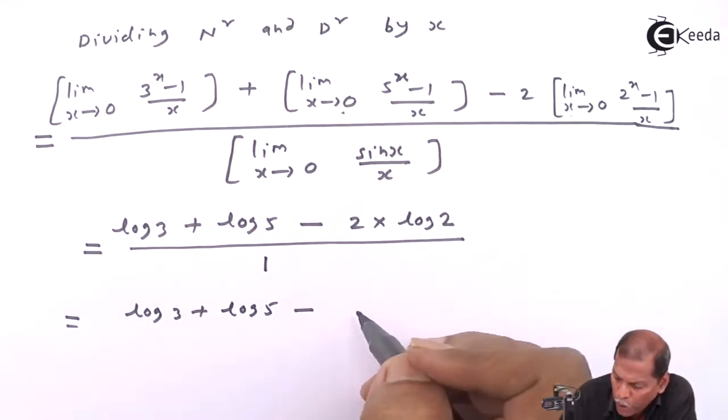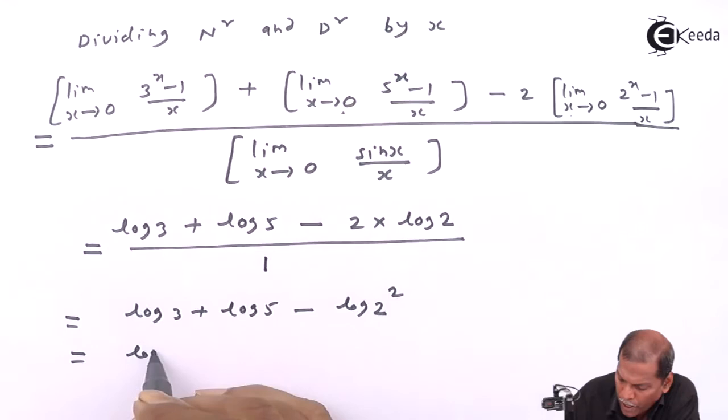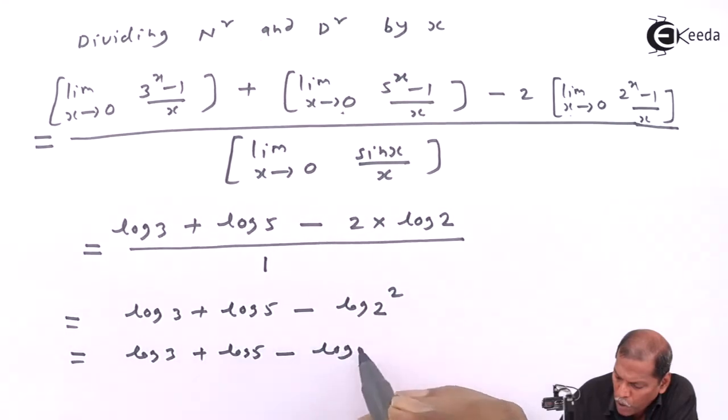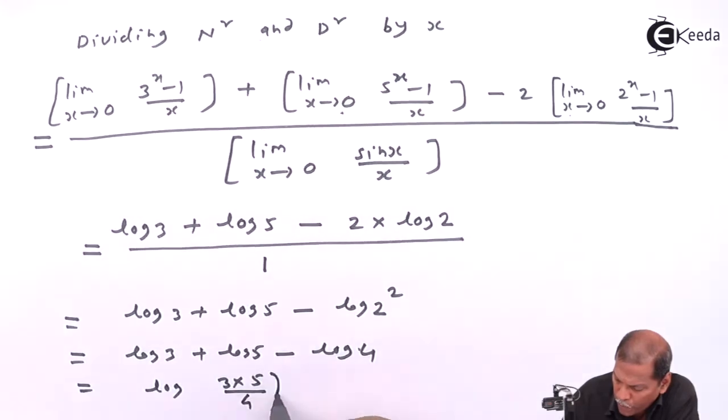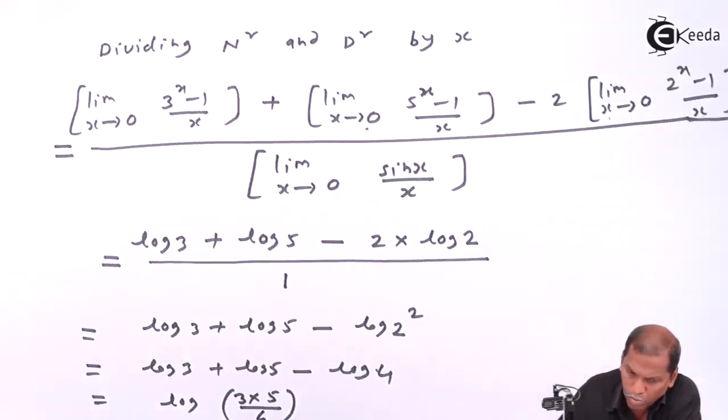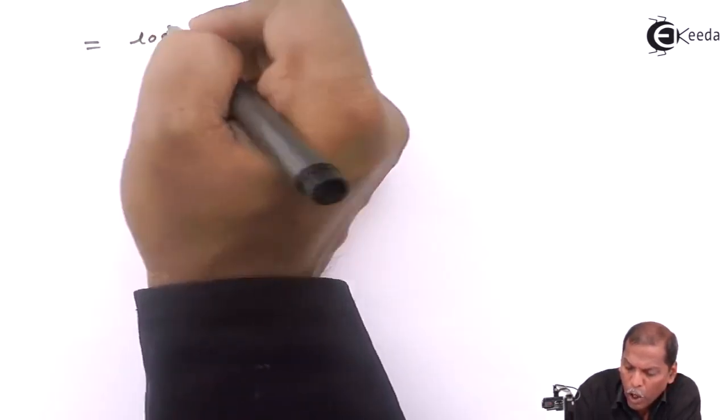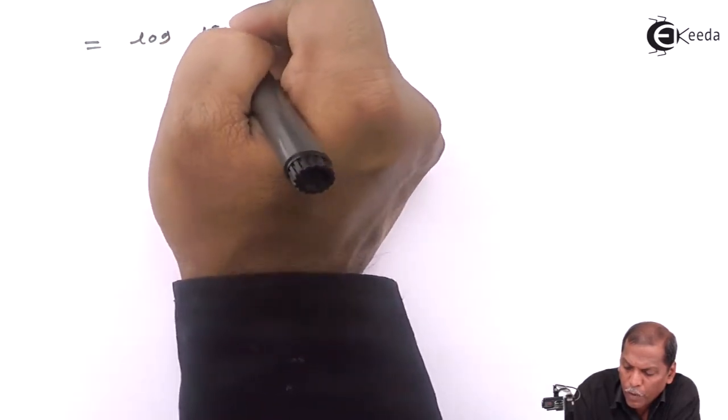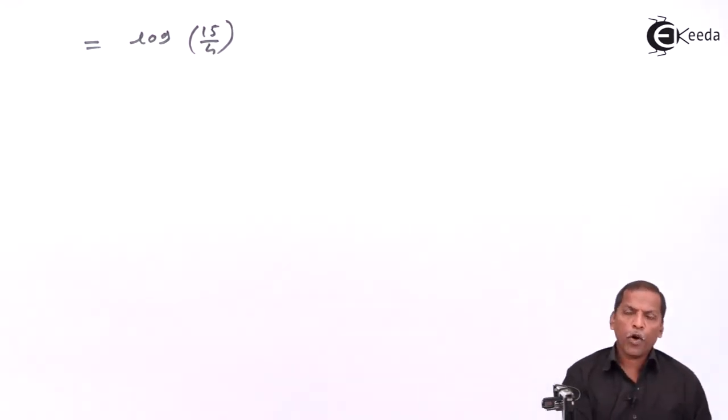Now by using exponent law, this I can write log to the whole square. Then that equals log of 3 plus log of 5 minus log of 2 square 4. And that equals log in bracket 3 into 5 upon 4. And that equals log of 15 upon 4. So this is the required solution for the given problem.